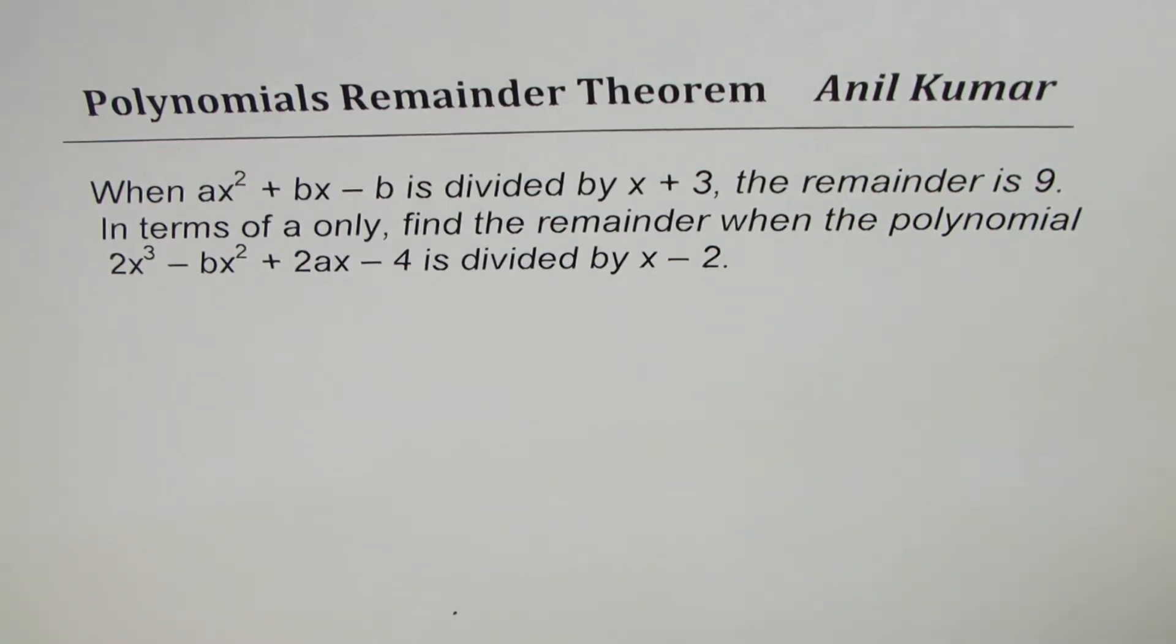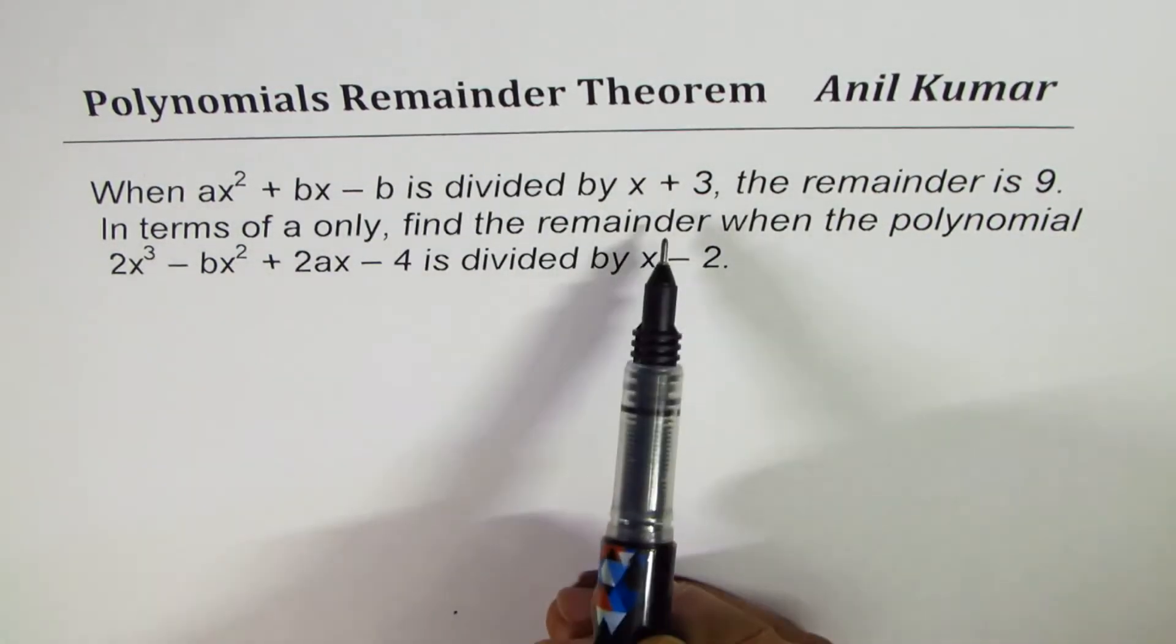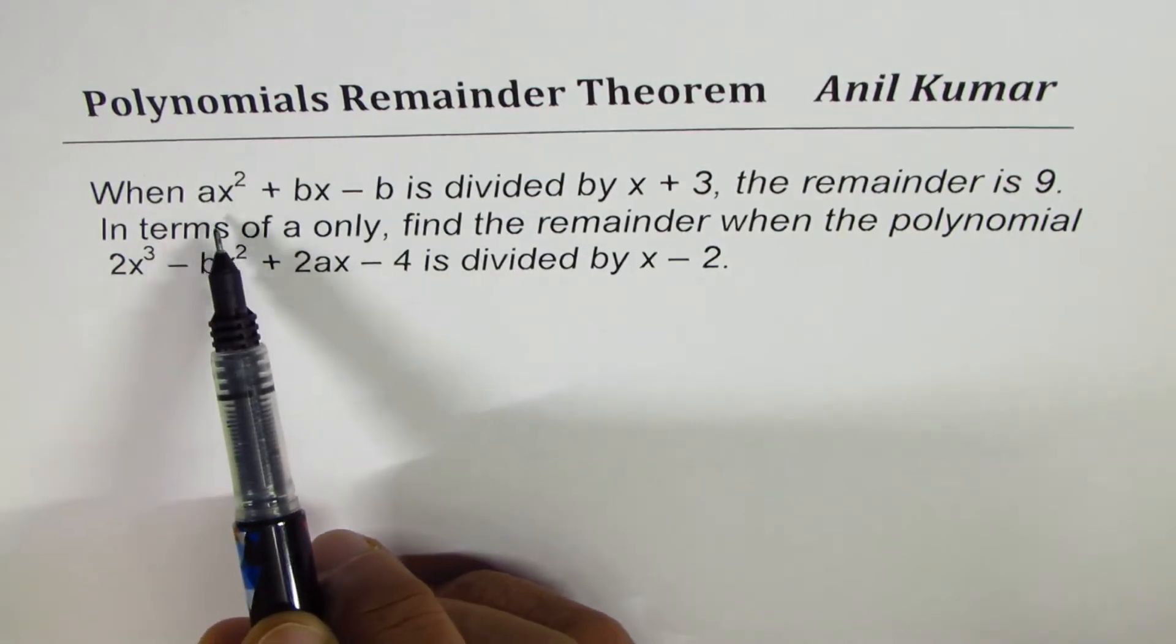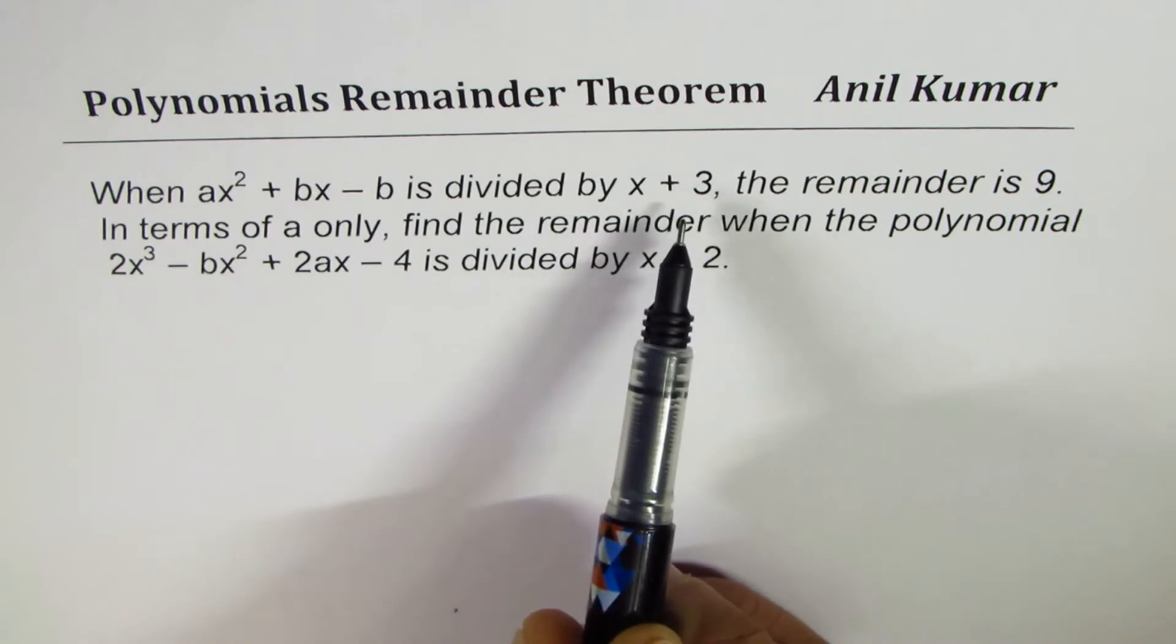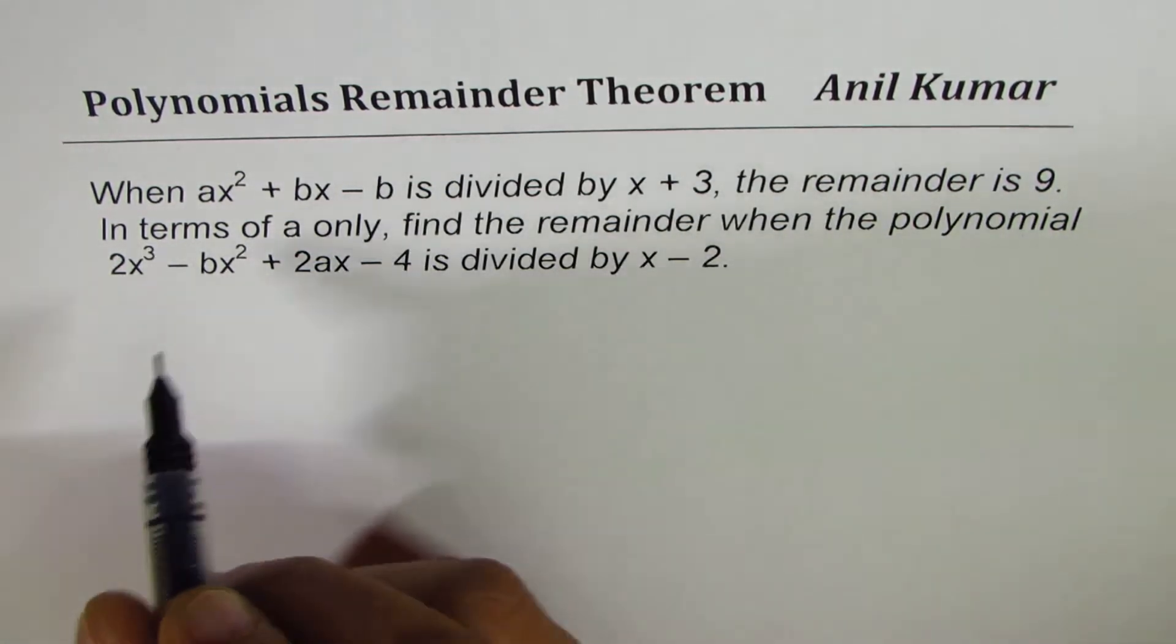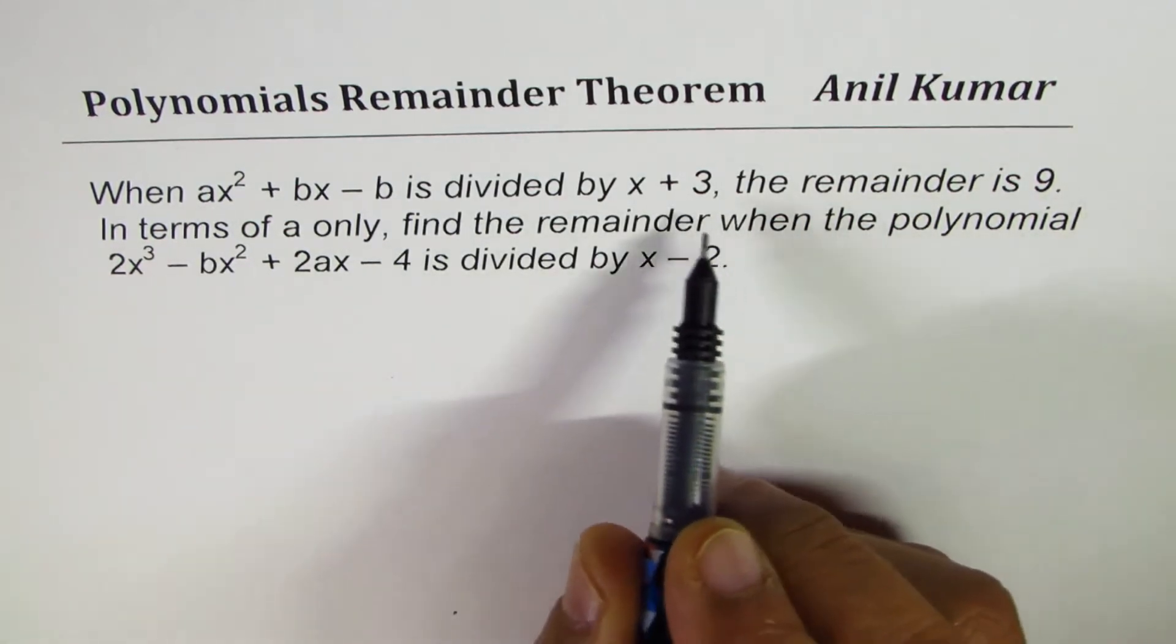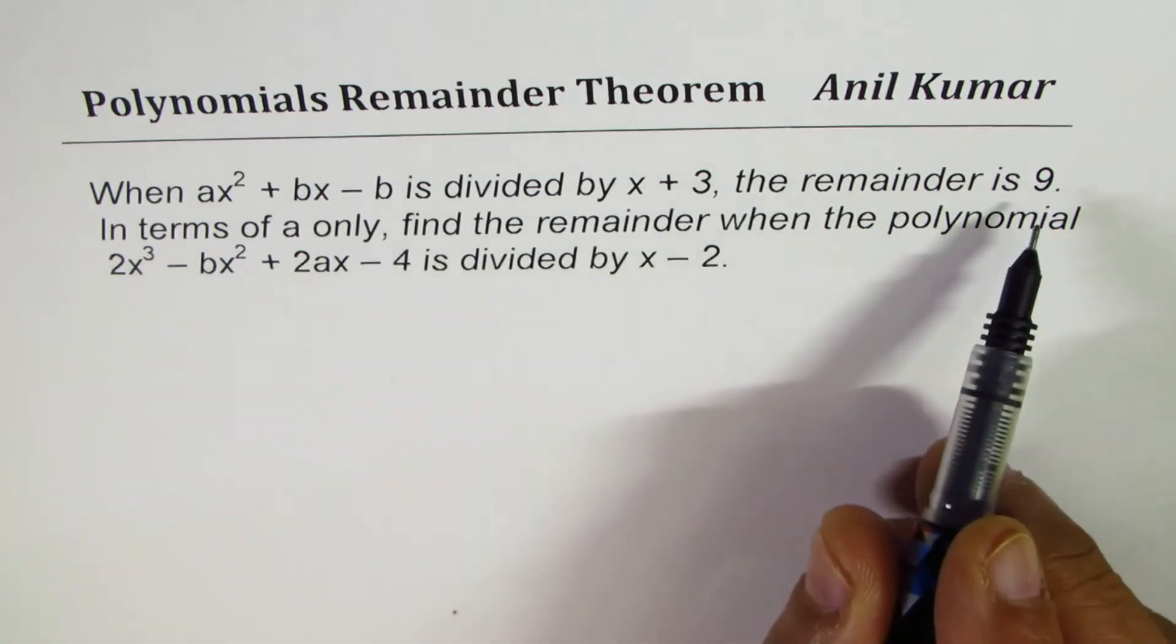So let's begin by applying the remainder theorem. In the first statement we are given that the polynomial ax square plus bx minus b is divided by x plus 3, remainder is 9. That really means that if I substitute x as minus 3, then the value of this function should be 9.